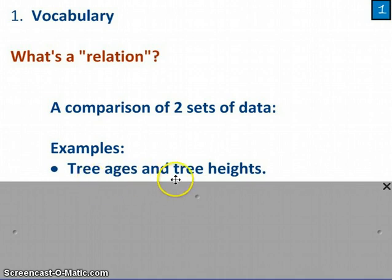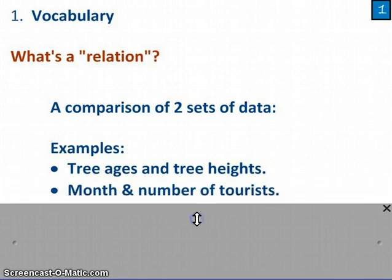So for example, tree age and tree height, you might think that there's some sort of logical relation between them. But at this point, we're just comparing the two sets of data. Similarly, if you're doing a study of tourism, you might think there's some sort of relation between the month of the year and the number of tourists that you see walking around town.